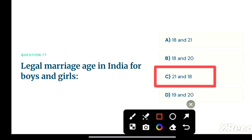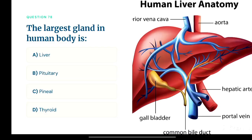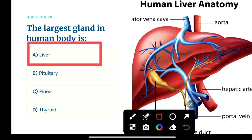Next question: the largest gland in the human body is — option A: liver, option B: pituitary, option C: pineal, option D: thyroid. The correct answer is option A, liver. The liver is the largest gland in the human body.